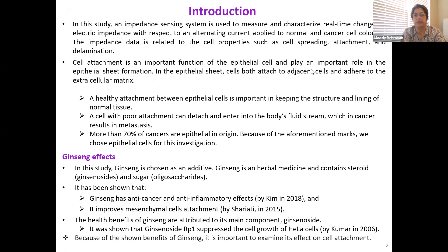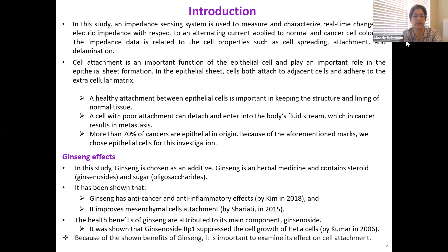In this study, an impedance sensing system is used to measure and characterize real-time changes in electric impedance with respect to an alternating current applied to normal and cancer cell colonies. The impedance data is related to the cell properties, such as cell spreading, attachment, and delamination.